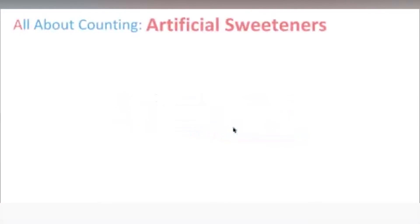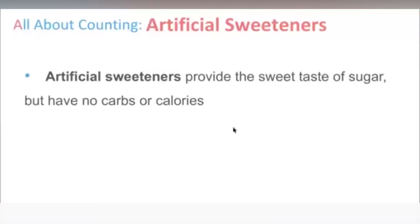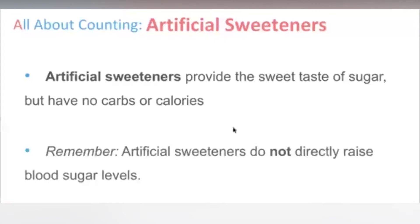Things that are sweet — artificial sweeteners — and there are so many of them. They provide the sweet taste of sugar but have no carbs or calories. My uncle, who motivated me to become an endocrinologist, used saccharine for his tea back in India. Artificial sweeteners do help — they have no carbs or calories and do not directly raise blood sugars. Sometimes some of them can increase insulin resistance, but in general, they don't.